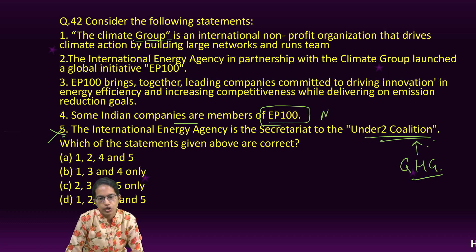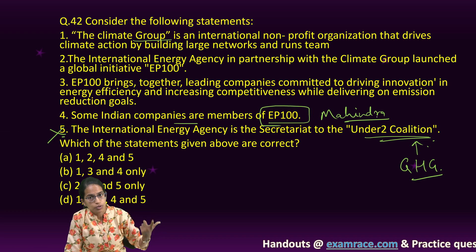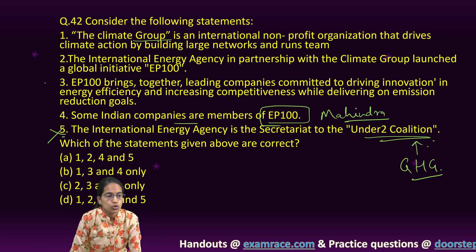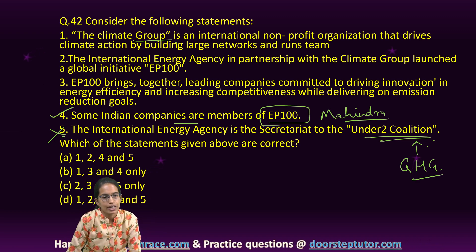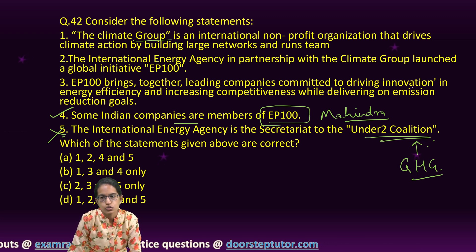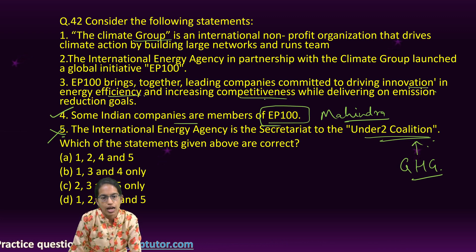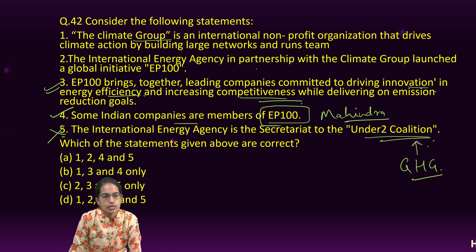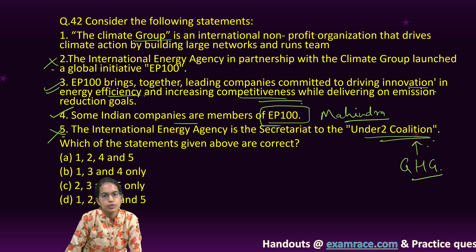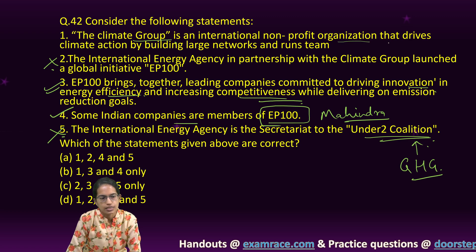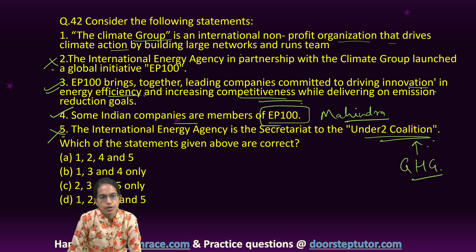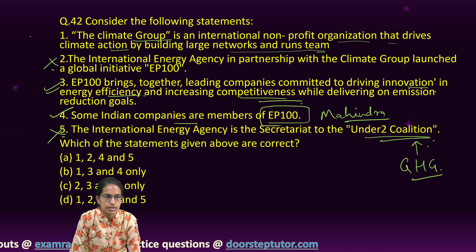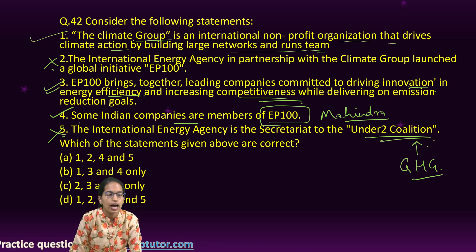Some Indian companies are members of EP100 — for example, Mahindra & Mahindra was the first, and Godrej & Boyce committed to join by 2030. EP100 brings together companies to drive innovation in energy efficiency and increase competitiveness, so statement three is correct. The Climate Group is not partnered with atomic energy, making statement two incorrect. The Climate Group is an international non-profit that drives climate action through large networks. So statements one, three, and four are the right options.